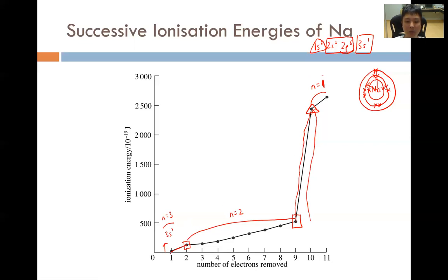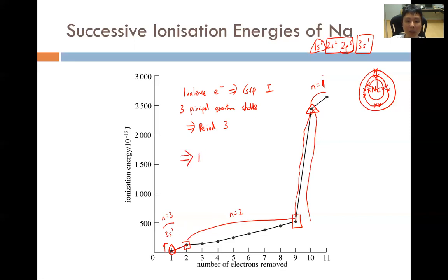We can see that there is one electron in the valence shell, eight electrons in the second shell, and two electrons in the most inner principal quantum shell. If this data shows all the ionization energies of the atom, we can conclude that it has only one valence electron — one valence electron means it is in group 1. It also has three principal quantum shells, which implies it is in period 3. Period 3, group 1 leads us to conclude this element is sodium.